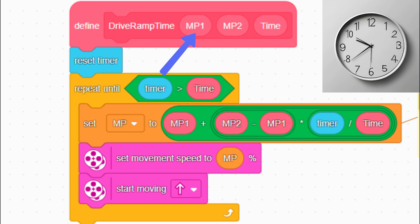This ramp is based on time. We change the speed from MP1 to MP2 in the number of seconds given in parameter time. To do this we first reset the timer to zero, then stay in the repeat loop until the time is over. During this time the speed has to change linearly from MP1 to MP2.